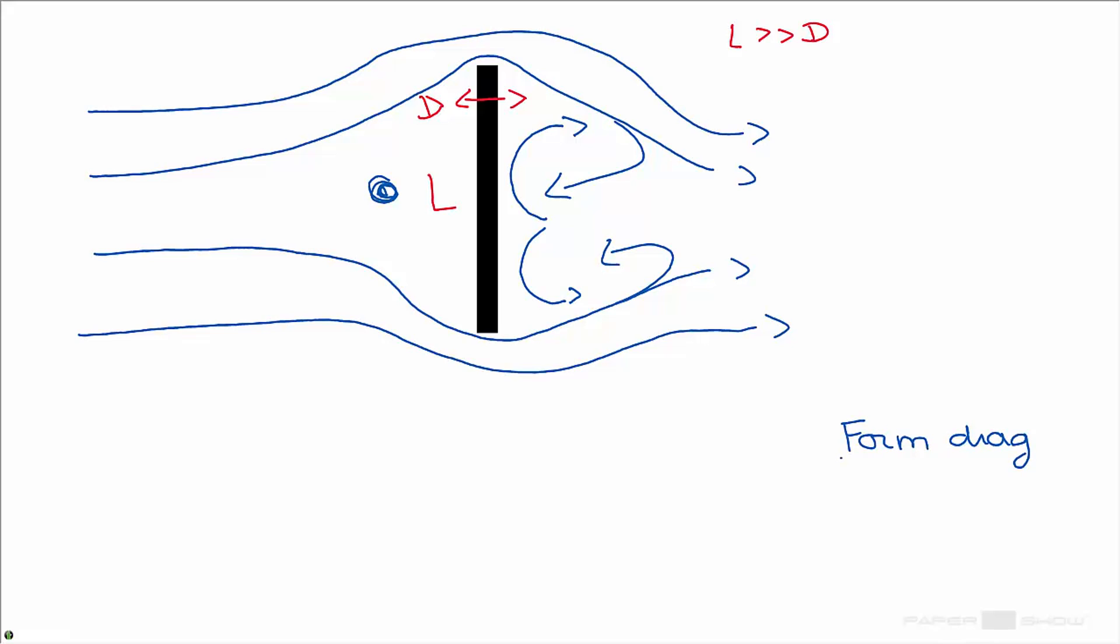Now first, what was the form drag again? The form drag was when a certain fluid or liquid or gas has to deflect from the path it would normally take, and therefore it experiences some stress which causes friction or drag as we call it, and this is the form drag.